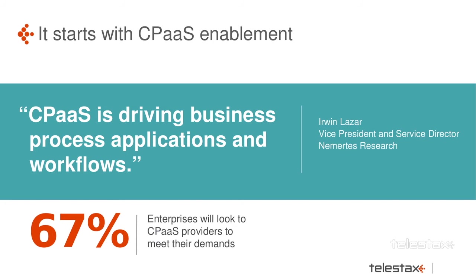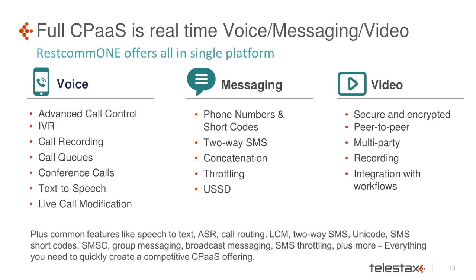It all starts with the CPaaS capabilities — the core capabilities of our platform. We know it's driving business process applications and workflows, and we're seeing record growth in the market for CPaaS players. Enterprises are looking for APIs and ways to integrate into your network. Out of the box, we're able to support advanced call control, IVR, call queues, text-to-speech, messaging including A-to-P types, alerts, reminders, and with WebRTC we also have the ability to support video right out of the box. As soon as we set you up — usually a four-to-six-week process — you have access to all of these capabilities immediately.